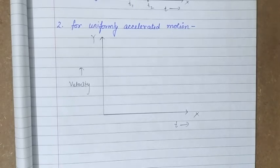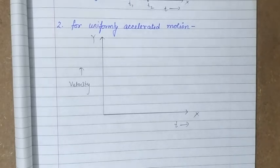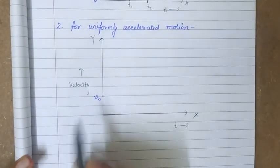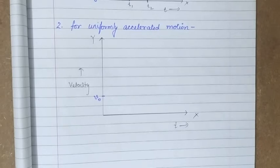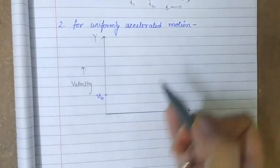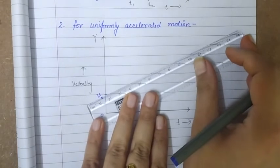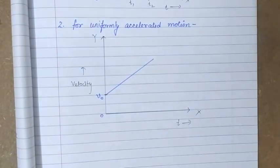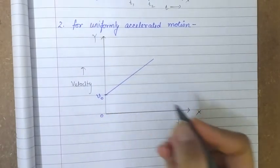Because of this equal change in velocity in equal time intervals, the graph we get will be a straight line inclined to the time axis. We assume that the initial velocity of the body is v0, and from this velocity the body starts moving, changing its velocity by equal amounts in equal intervals of time. So we get a straight line inclined at angle theta to the time axis.